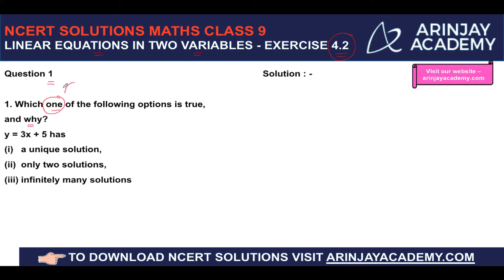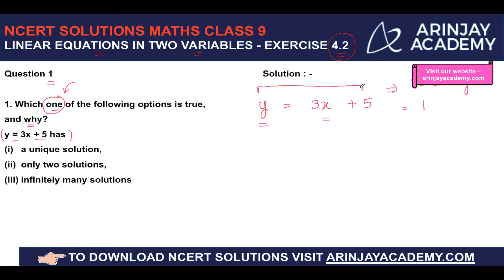There is only one correct answer. You have a linear equation in two variables given as y is equal to 3x plus 5. This is a linear equation in two variables because there are two variables, x and y, and the highest degree of both variables is 1.